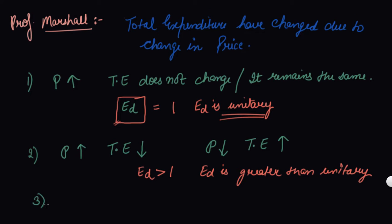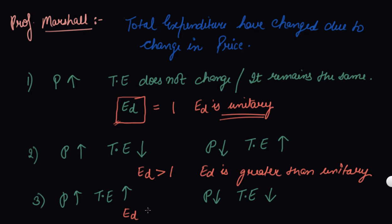The third case: price and total expenditure move in the same direction. If your price increases, your total expenditure also increases; if your price decreases, your total expenditure also decreases. In this case your elasticity of demand is less than 1 — less than unitary.